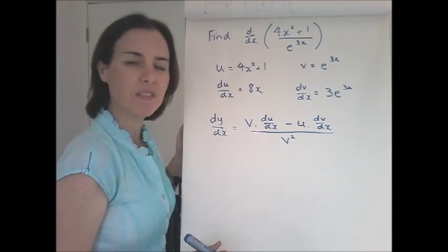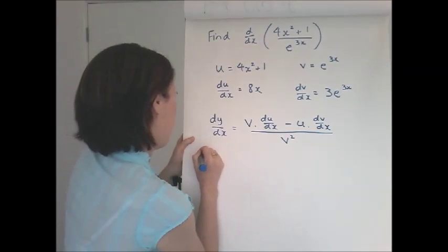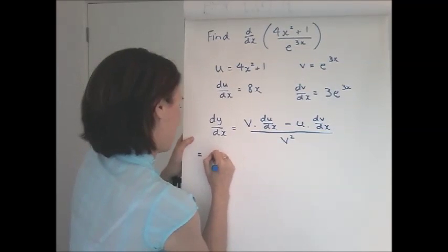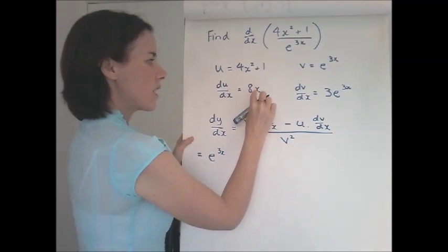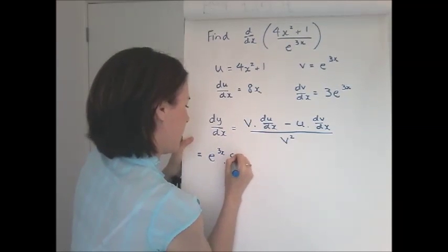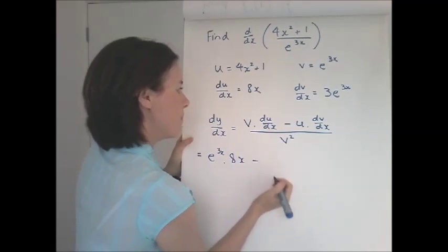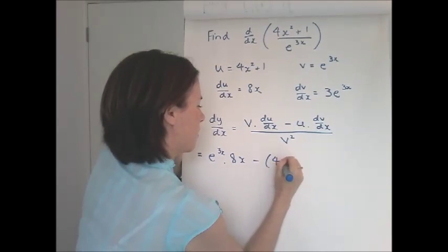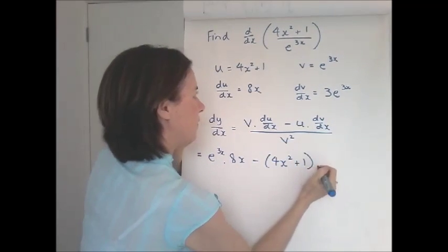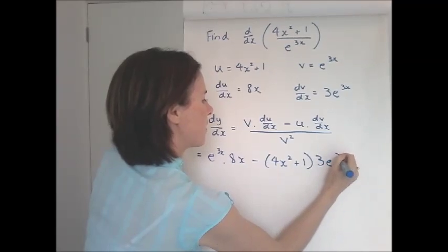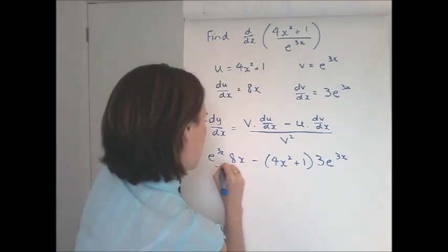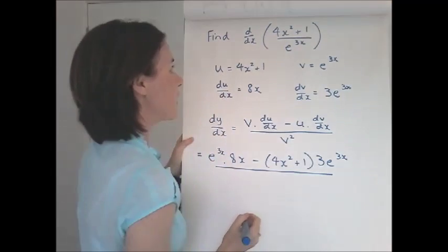Now we substitute everything we have into that. V, this comes first, e to the 3x times du/dx is 8x, minus u times dv/dx, so 4x squared plus 1 times 3e to the 3x. That's what we have on top and it's all over v squared.